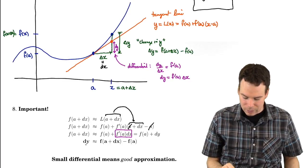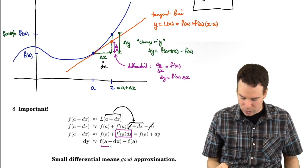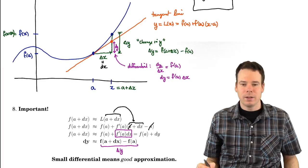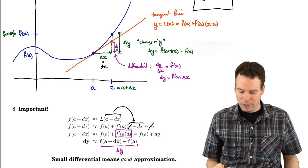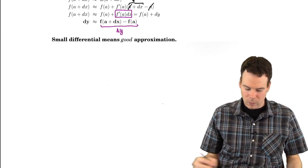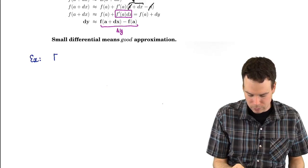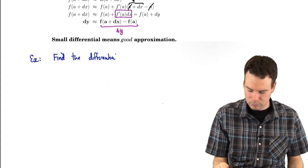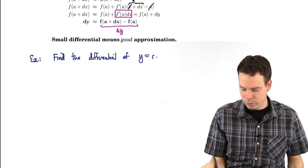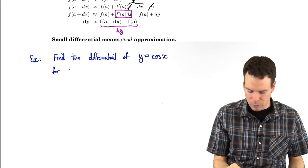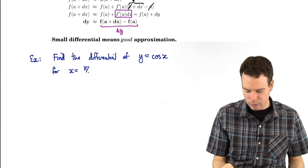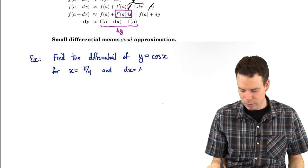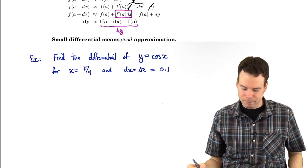So the differential is approximately delta y. The change in y can be approximated by the differential, the differential we can compute using the derivative, and the change in y is just the difference in the function values. Let's look at a quick example of computing a differential. Find the differential of y equals cosine of x for x equals pi over 4 and dx equals 0.1.